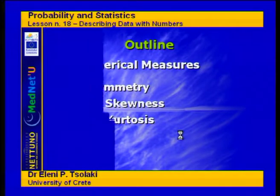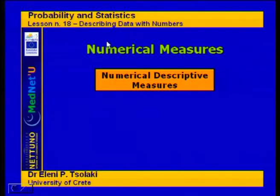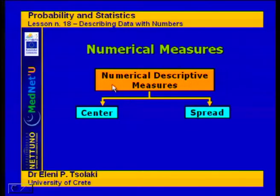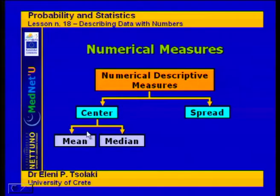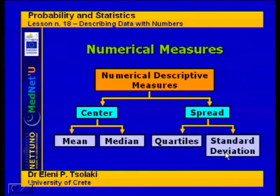The most important numerical measures are the ones that measure the center and the spread of the data. For the center we are going to see the mean and the median, and for the spread we are going to see the quartiles and the standard deviation.